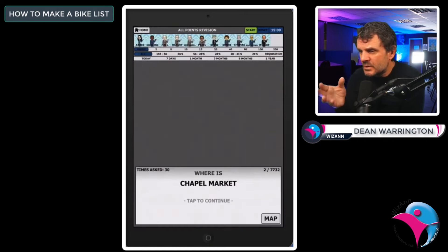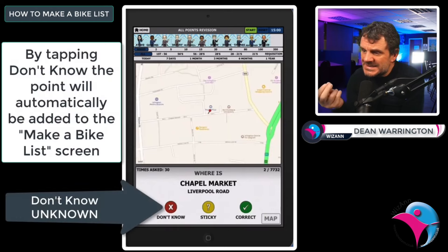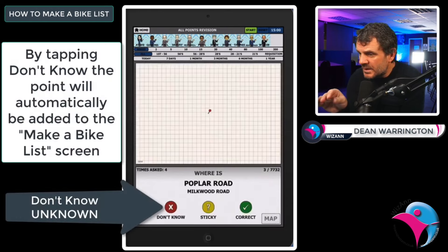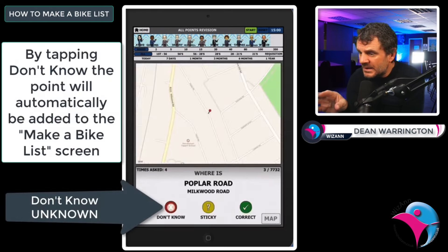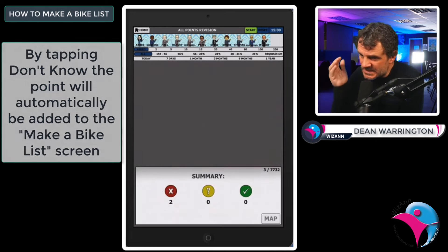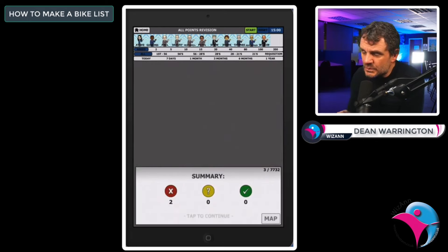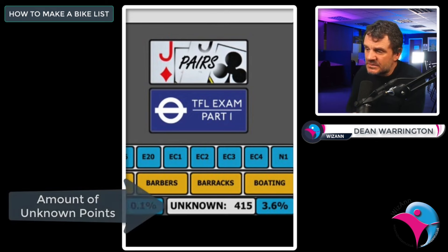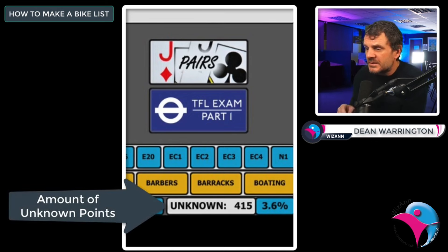Every time you mark a point as unknown, it is in your make a bike list window. There is no point making bike lists with known points or sticky points. It's all to do with the unknown — how to get out and see those points and point them and know them. The larger your unknown list, the better the bike lists you can make.